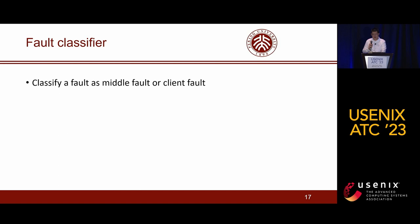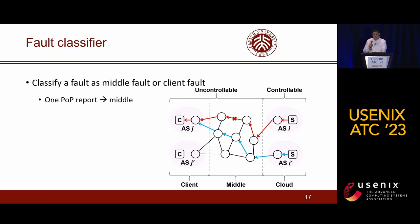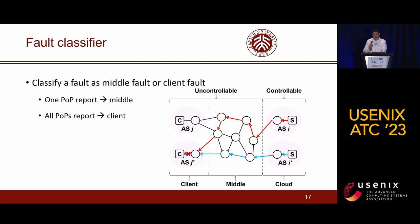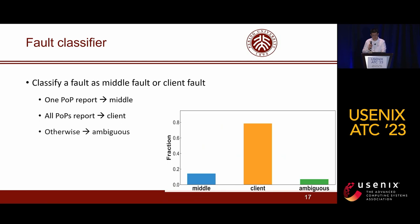After filtering out fake faults, the fault classifier further identifies fault categories by using the number of POPs that report each victim AS. There are three cases. The first case is when the victim AS is reported from only one POP — the classifier determines it is a middle fault. The second case is when the victim AS is reported from all POPs — the classifier identifies it as a client fault. This classification is based on the observation that for different POPs, the middle paths are different while the client paths are usually similar. Therefore, a victim AS reported from one POP is incurred by a middle fault with high probability, while one reported from all POPs is incurred by a client fault with high probability.